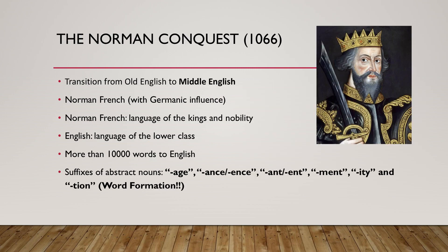The event that began the transition from Old English to Middle English was the Norman Conquest of 1066. The Normans landed in England and defeated the Anglo-Saxons. The Normans spoke rural dialects of French with considerable Germanic influence, also known as Norman French, which was quite different from the standard French of Paris. Anglo-Norman French became the language of the kings and nobility of England for more than 300 years, and the lower classes continued to speak English. The mixture of Old English and Norman French is usually referred to as Middle English. The Normans left over 10,000 words to English, including a large number of abstract nouns with certain suffixes.